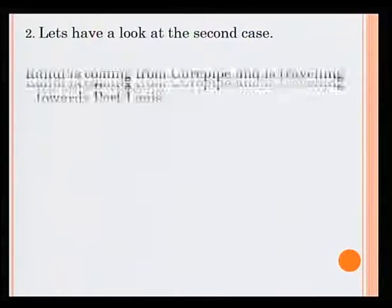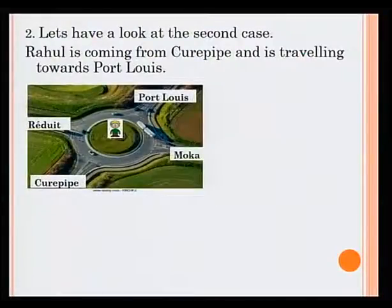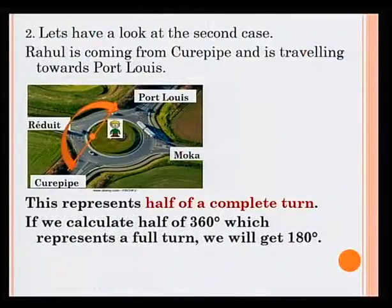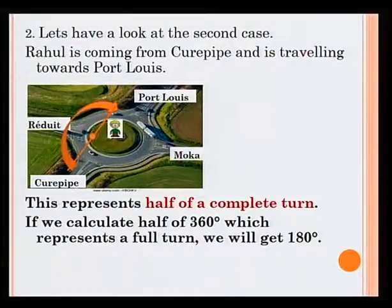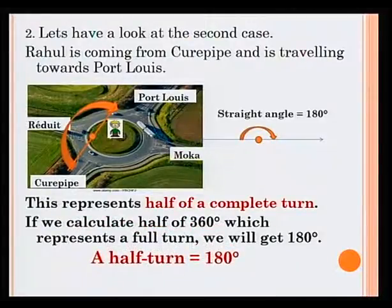Case 2: Rahul is coming from Q-Pip and is travelling towards Port Louis. This represents half of a complete turn. If we calculate half of 360 degrees, which represents a full turn, we will get 180 degrees. Half of a turn is equal to 180 degrees, also known as a straight angle.